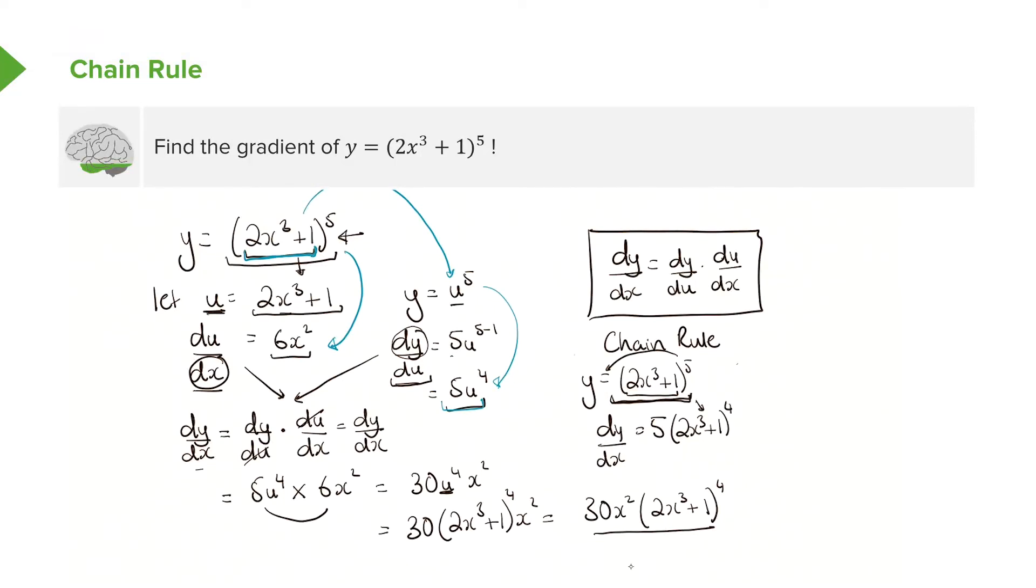Once I've done this, I'm now going to focus on the inside function here. So, what is the differential of 2x³? It's 6x². And now, if you write it all together, if we just do that here, that gives me 30x²(2x³ + 1)⁴. And you can see that they're the same answers.